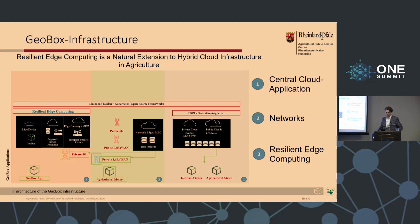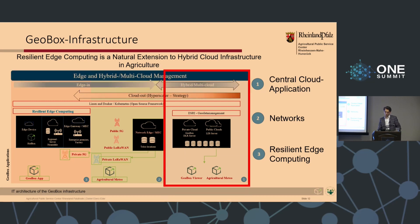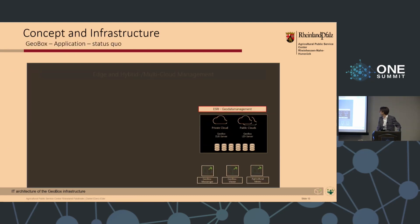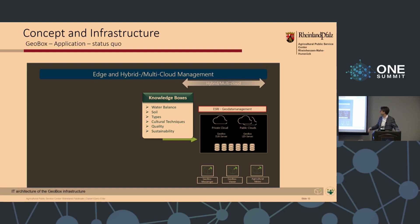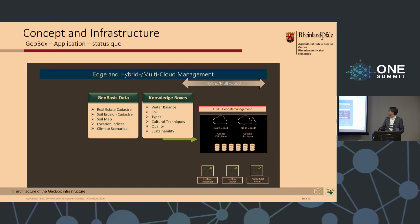Our infrastructure looks like that. We will have a short focus on the central applications, which show us the importance of having applications for farmers to produce sustainably and smartly. The first one is the knowledge boxes — information from public or private advisors about soil types, cultural techniques, sustainability, measurements, and so on. We also have geobasis data from the country: real estate, cadastre, soil maps, location indices, climate scenarios, and so on.